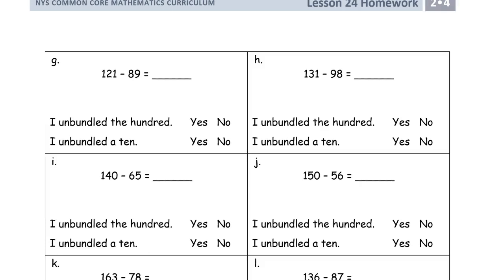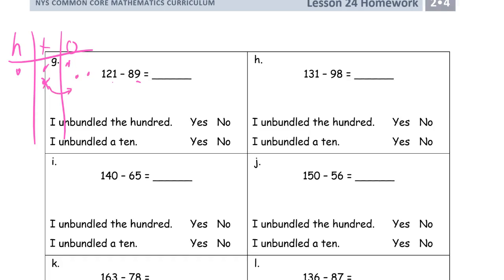More of the same: 121 minus 89. This would actually be easier to do mentally, but we're thinking about how to do it with the disks. Draw the HTO chart: 121 is one 100, two tens, one one. Subtracting 89 means crossing out 9 ones, but I only have 1, so I have to unbundle a 10 to get enough ones. After unbundling, I subtract 9 and have 1 left. Now I need to cross out 8 tens, but I only have 1.